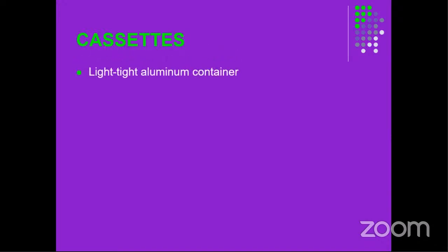The cassette is a light-tight aluminum container that contains the intensifying screen. When ready to do the radiograph, you place the film inside in a dark room so the film is not exposed to light. Once done, you remove the film and keep the cassette. When you have another patient, you pick the cassette, place a new film inside, and then expose the patient.